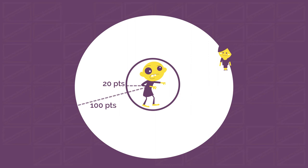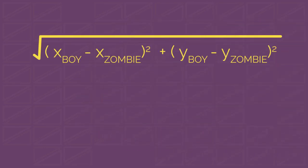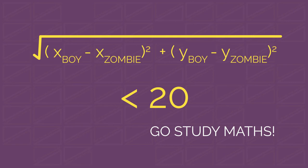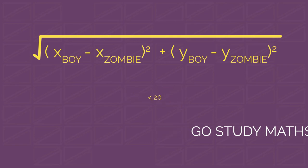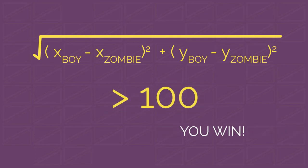Our computer only knows the coordinates of the boy and the zombie, but we now know that this is the only data it needs to find the distance. So our command to the computer will look like this: if the value of this expression is less than 20, go and study maths. And if the value of this expression is more than 100, then the player wins.